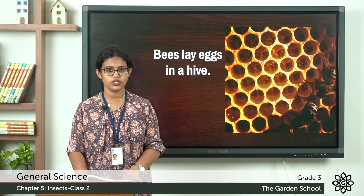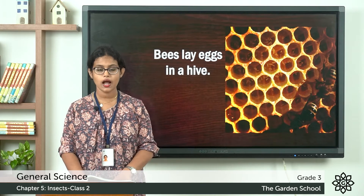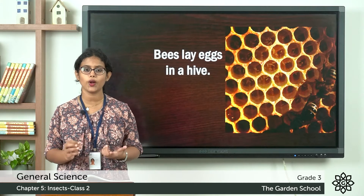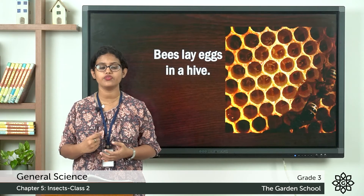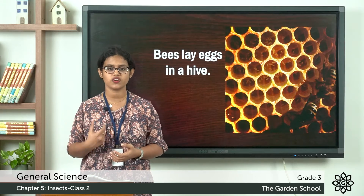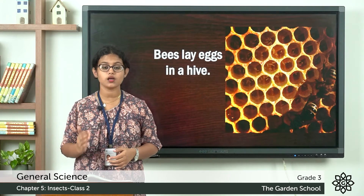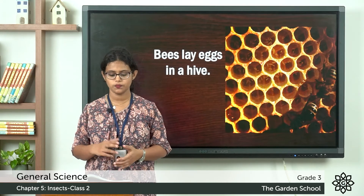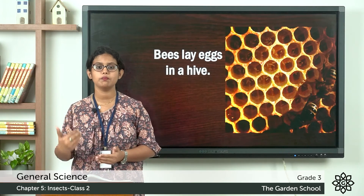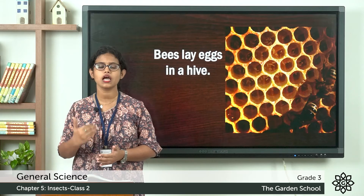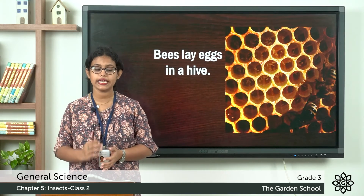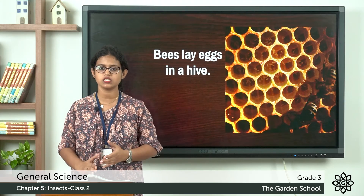Now turn to page number 52 in your textbook. There are two questions given. First: bees feed on nectar — the sweet liquid present on the flower. Second: insects breathe through — the two options are stomata or spiracles. The answer is spiracles, those tiny holes present in the body of the insect through which they breathe.